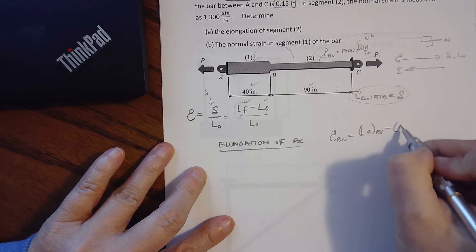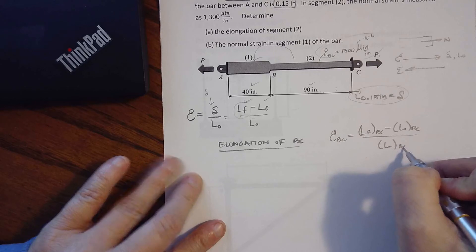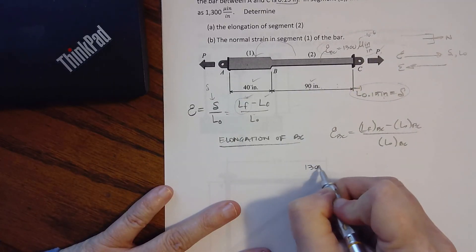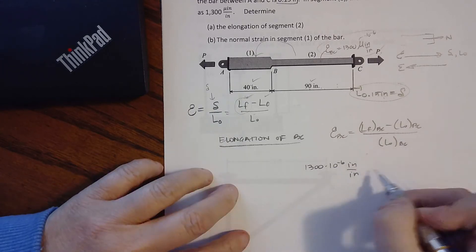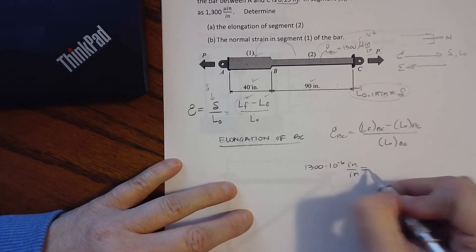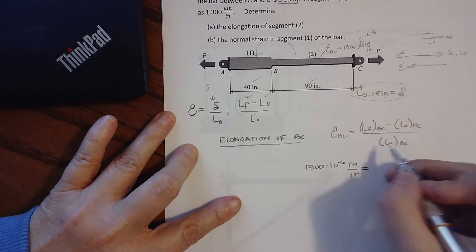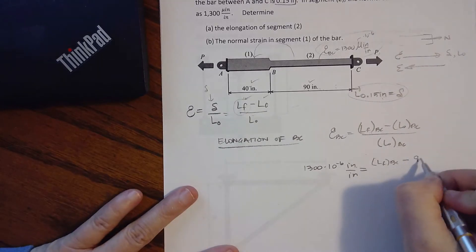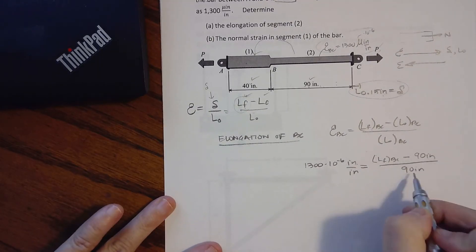Elongation of B to C. So strain of B to C equals the length final, I mean really we should label all of these, minus length initial divided by the length initial from B to C. So our strain is 1300 times 10 to the negative 6 inch per inch. Remember it's unitless but you can put whatever - inch per inch, foot per foot, it's the same ratio. Length final - we don't know what the length final of BC is, but we do know it was originally 90 inches.